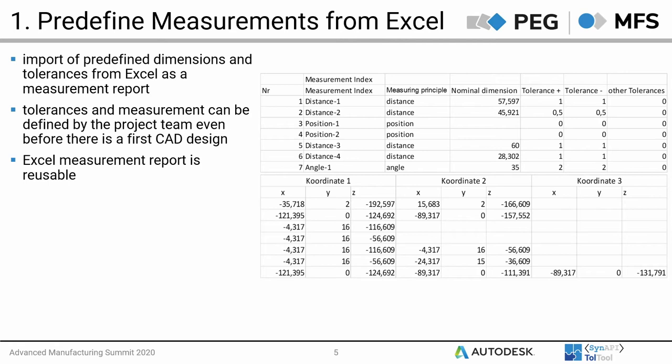To create a measurement, a unique name and the necessary coordinates are required. For example, for a distance measurement called 'distance1', the measurement principle is distance and you need two coordinates in x, y, and z direction. For a position called 'position1', you only need one coordinate. For an angle called 'angle1', you need three coordinates. This information is then imported into the Tolerance Tool.